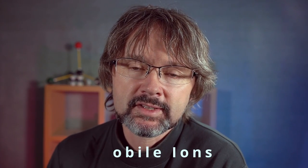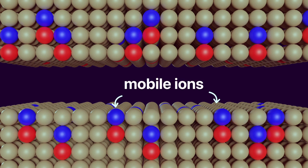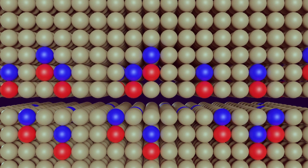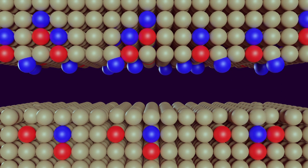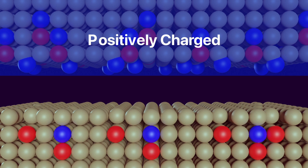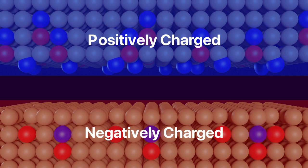Some materials have mobile ions on their surface, and if they just move to the other surface while they're being rubbed together, you get a charge separation. This is great when you do have mobile ions, but obviously doesn't work if you don't.